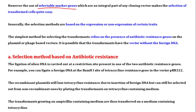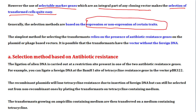A selectable marker is an integral part of the vector and makes the selection of transformed cells quite easy. Selection methods are generally based on the expression or non-expression of certain traits. The simplest method depends on the presence of antibiotic resistance genes.